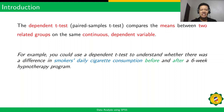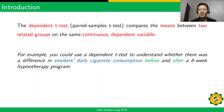The dependent t-test, or paired sample t-test, compares the means between two related groups on the same continuous dependent variable. For example, you could use a dependent t-test to understand whether there was a difference in a smoker's daily cigarette consumption before and after a six-week hypnotherapy program.